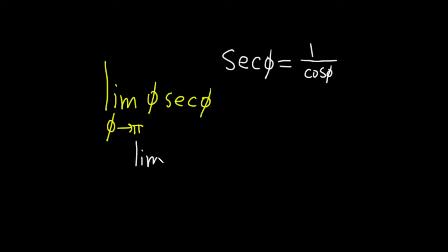This is the limit as phi approaches pi of phi times 1 over cosine of phi, rewriting the secant function as 1 over cosine.